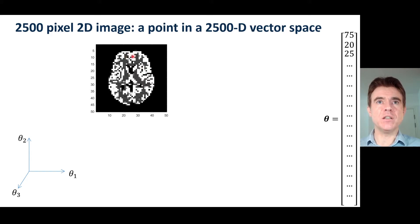And this is now a vector that exists in a 2,500 dimensional vector space. So this particular brain image here would correspond to one particular location in that 2,500 dimensional vector space.